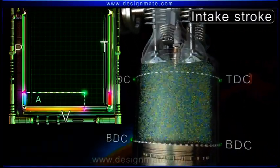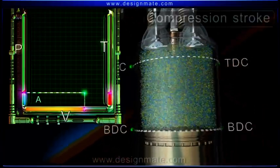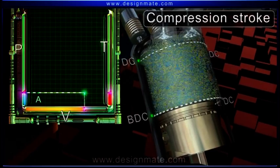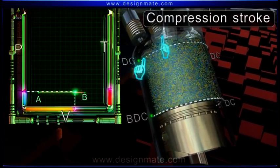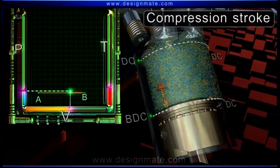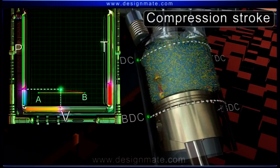The cylinder is full of fuel-air mixture at atmospheric pressure. Compression stroke. The piston moves upwards in the cylinder with both the valves closed. So the fuel-air mixture is compressed and its volume reduces.